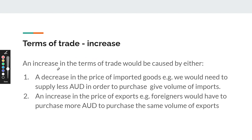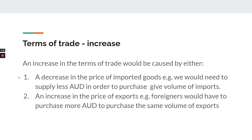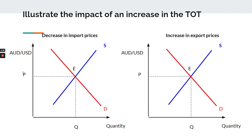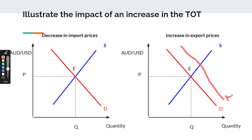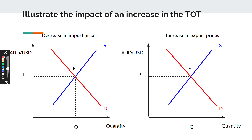The terms of trade incorporates commodity prices because commodities are exports, and the terms of trade measures export prices over import prices. For example, a decrease in import prices would mean a decrease in supply of Australian dollars, because we don't need to supply the same amount of Australian currency to buy the same imports. And if there's an increase in export prices, that's a demand thing — it means there's an increase in demand for Australian dollars, which would appreciate the dollar. Whenever the terms of trade increases, it will always appreciate the value of the Australian dollar.